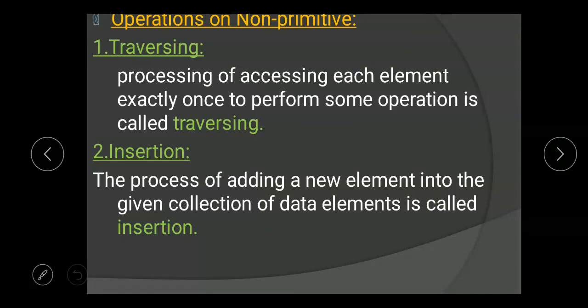Operations on non-primitive data structures: First, traversing — the process of accessing each element exactly once to perform some operation is called the traversing operation.